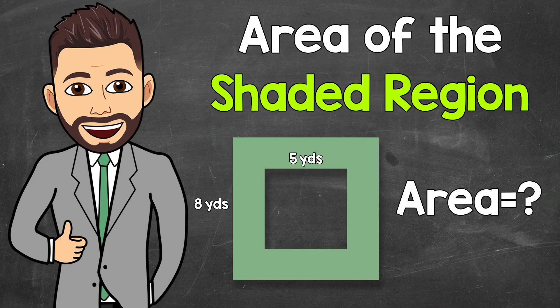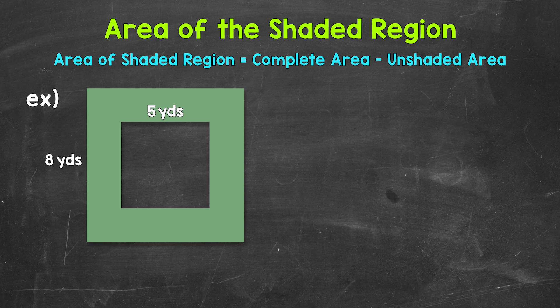Welcome to Math with Mr. J. In this video, I'm going to cover how to find the area of the shaded region. For our example, we have a square inside of a square, basically a square hole in the middle of a larger square. We need to find the area of the shaded region, so the green. We do this by finding the area of the larger outside square and then subtracting the area of the smaller inside square.